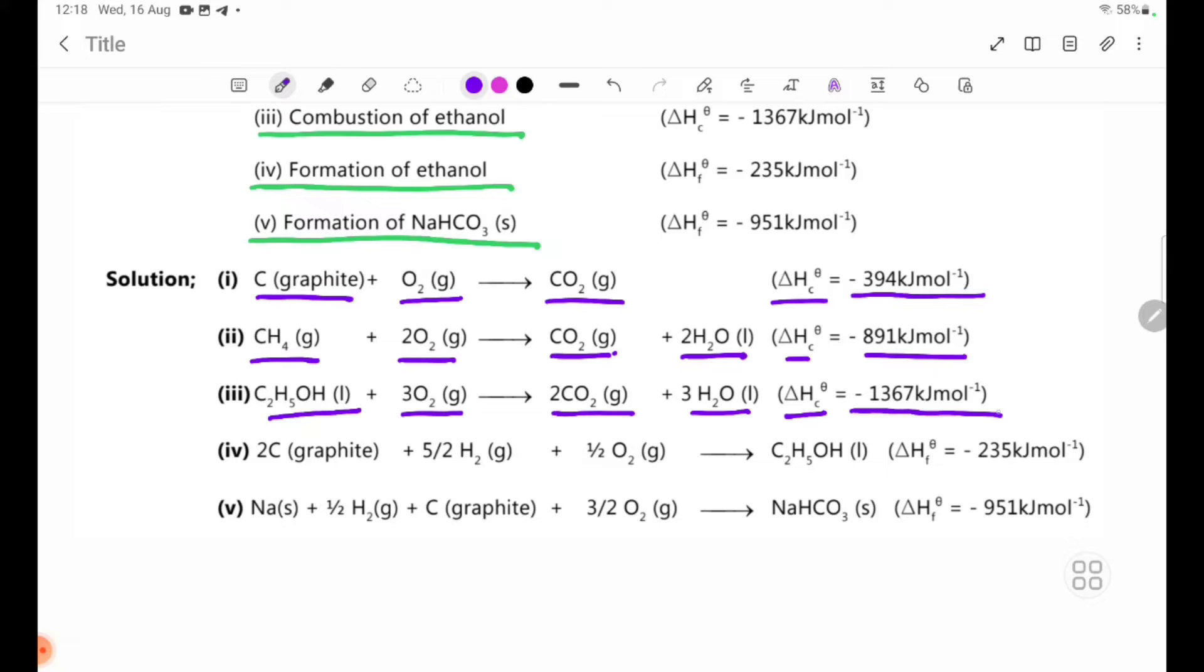Number 4: Formation of ethanol, C2H5OH. For formation, the reactants are the elements: carbon graphite, hydrogen H2 gas, and oxygen O2 gas, which combine to form ethanol. Delta H theta F equals minus 235 kilojoules per mole.